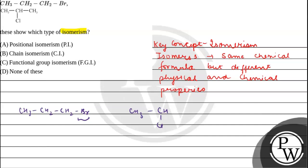If we look at both these compounds, their chemical formula is different because in one there is bromine and in one there is chlorine. So the chemical formula is different.